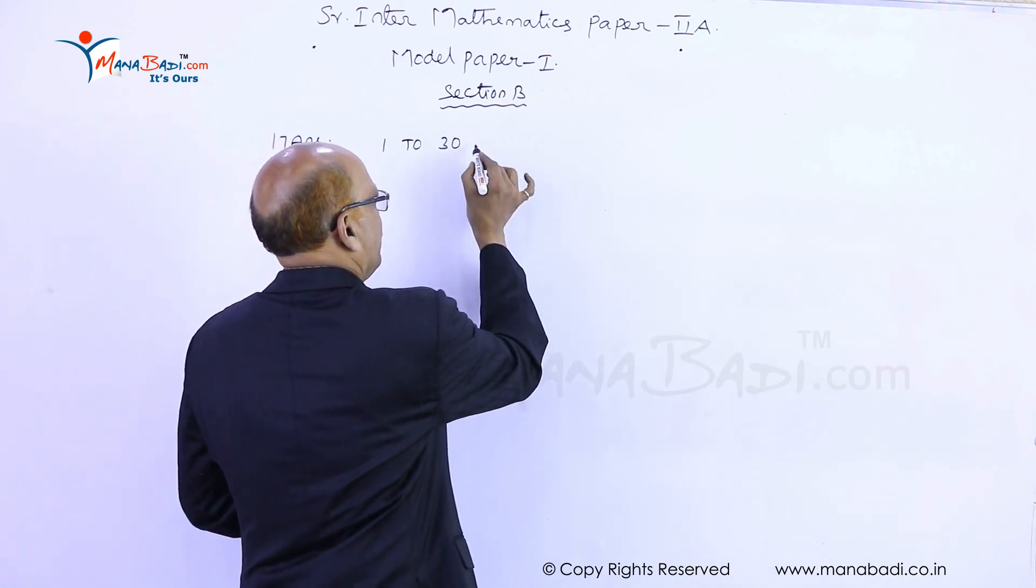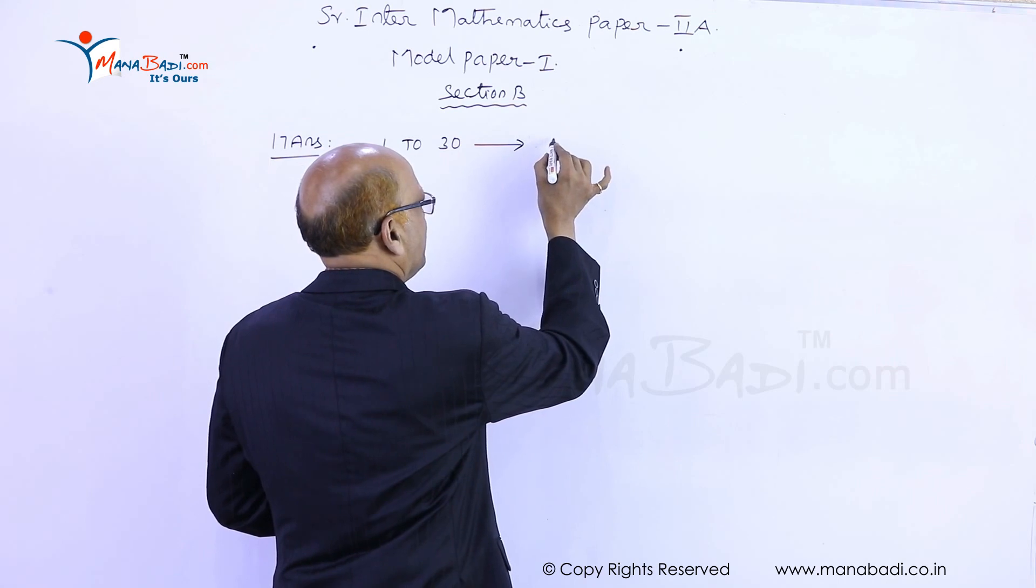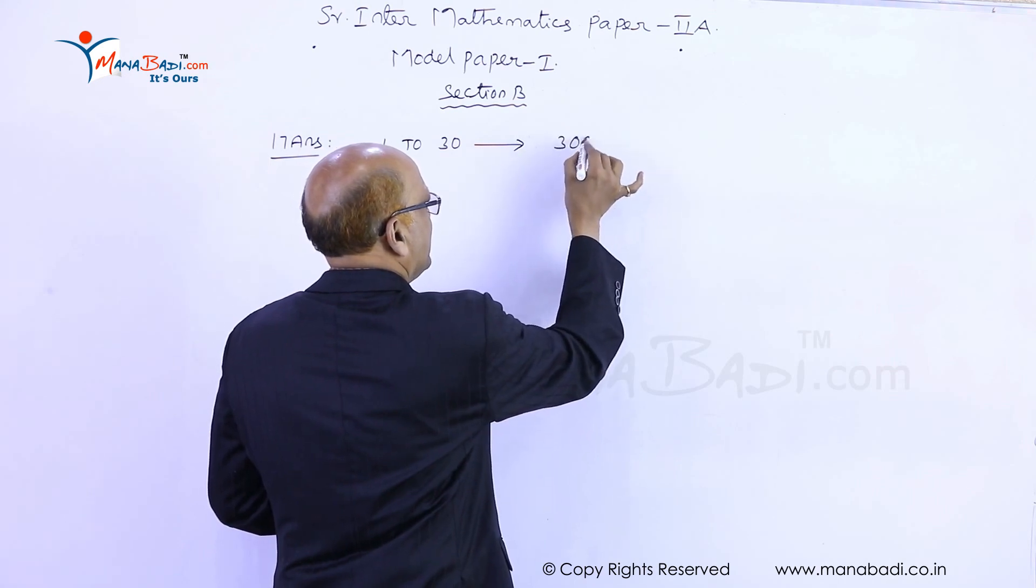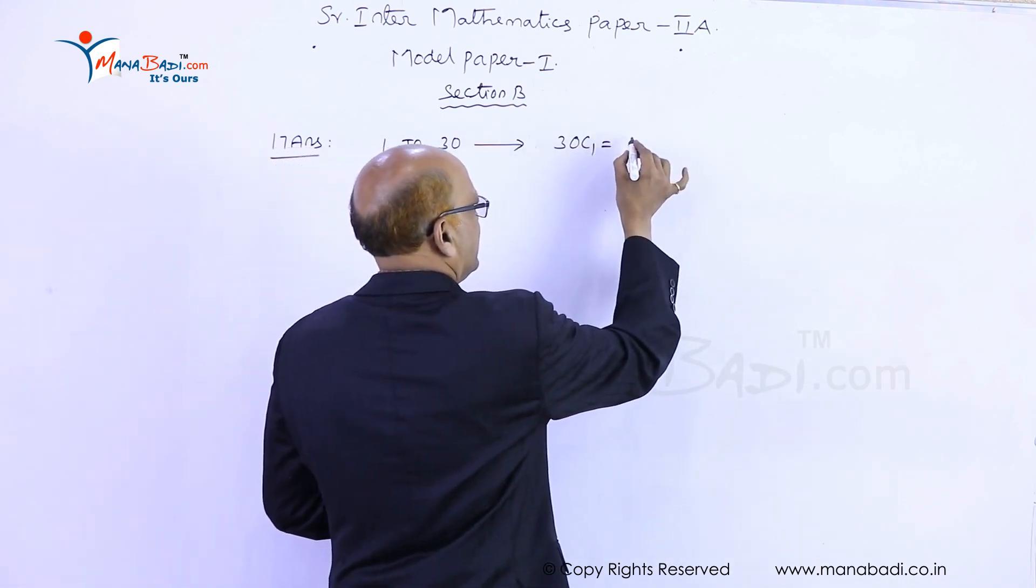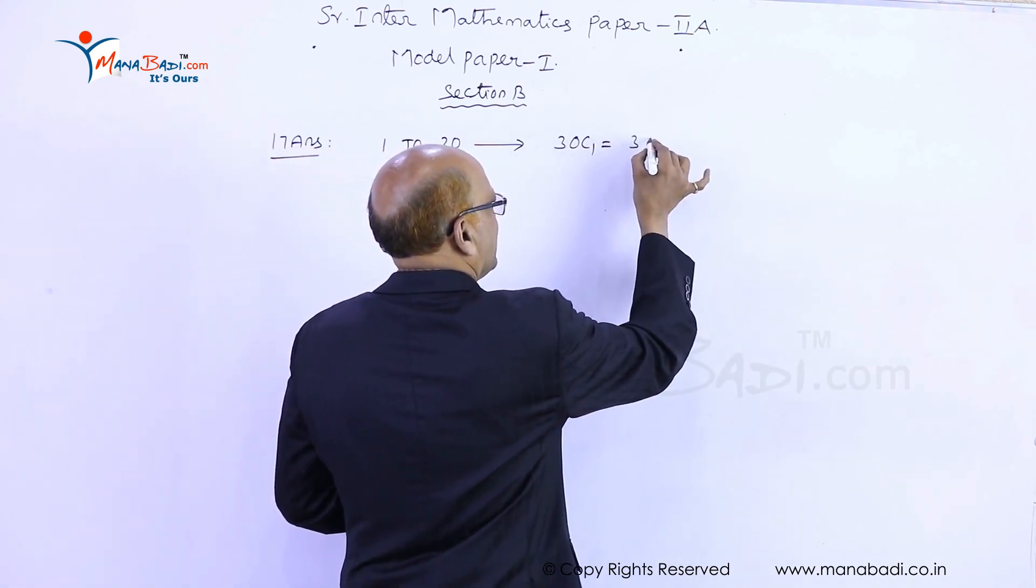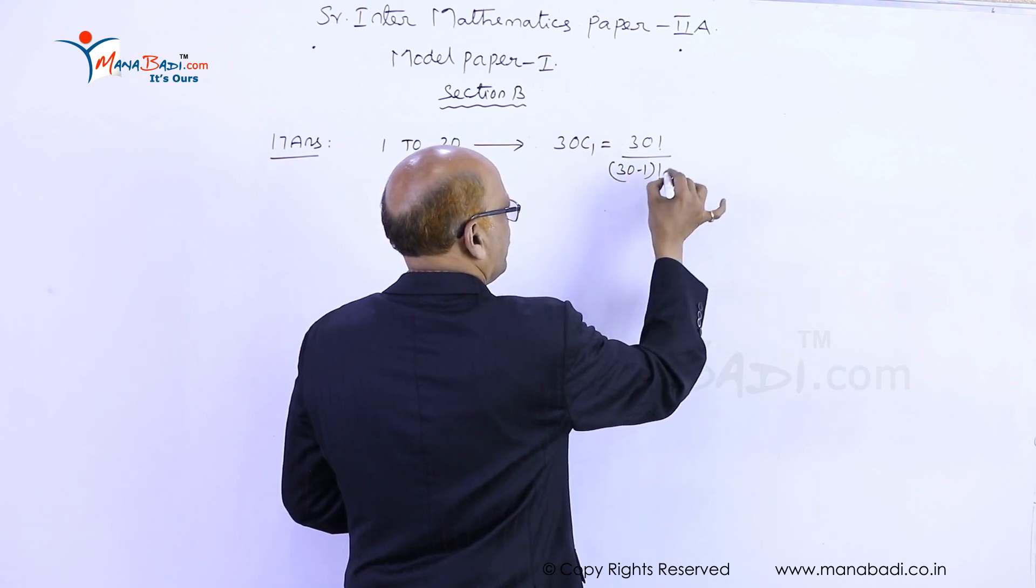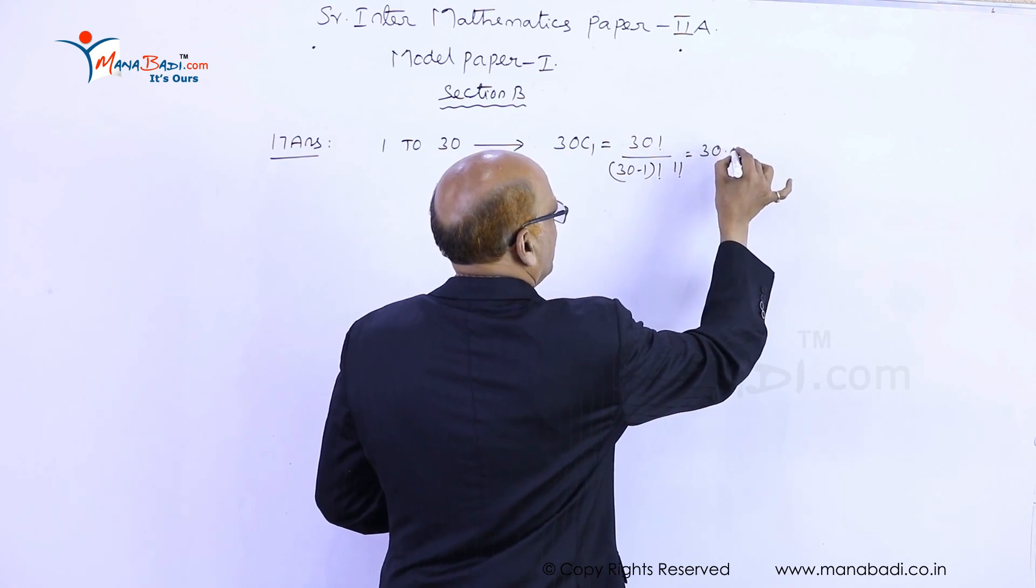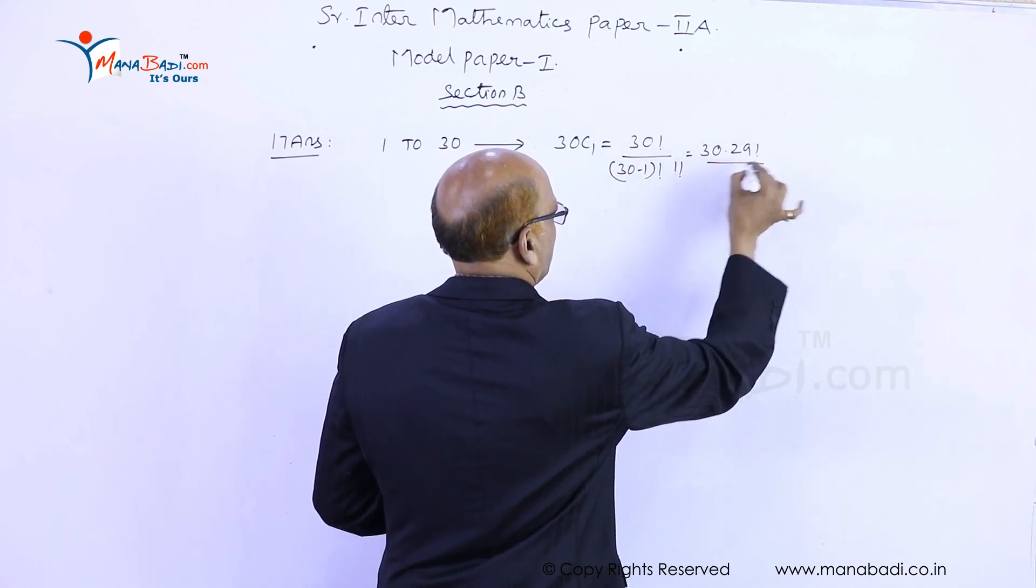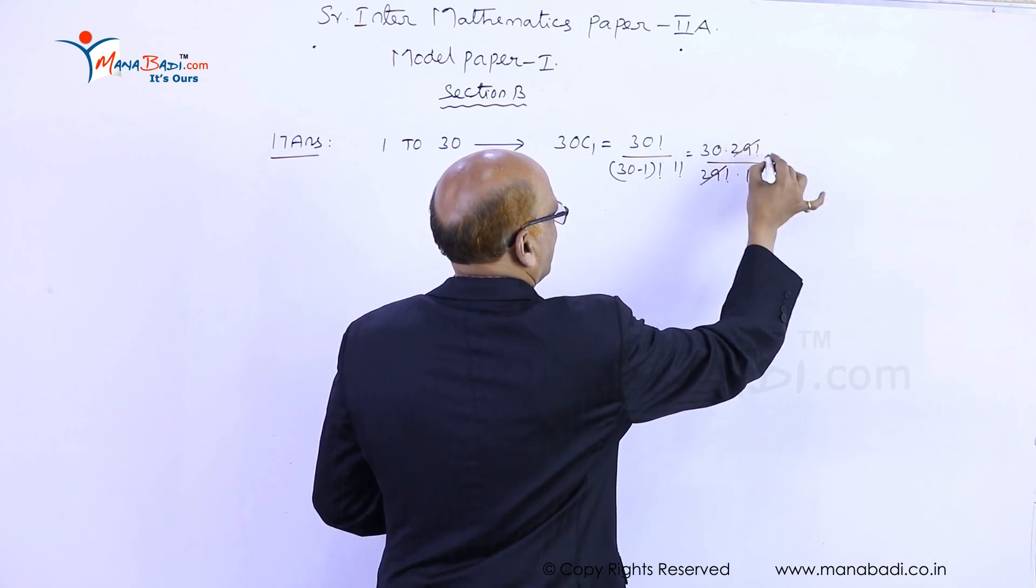When we are selecting one ticket, we can write it as 1 out of 30 tickets. That is 30 factorial by (30-1) factorial into 1 factorial. That is 30 into 29 factorial by 29 factorial, 1 factorial is 1, this gets cancelled.